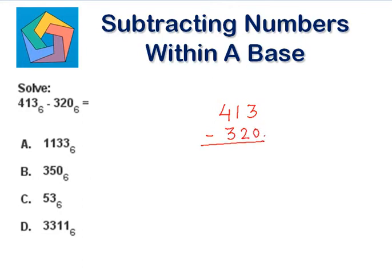3 minus 0 is 3. 1 minus 2. Now, 1 is less than 2, so we need to borrow from the left hand side.